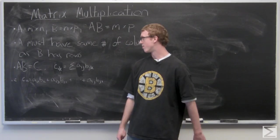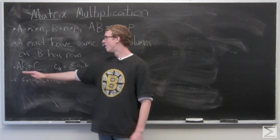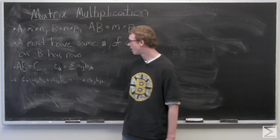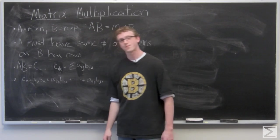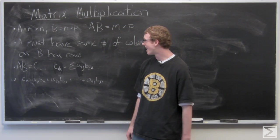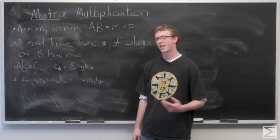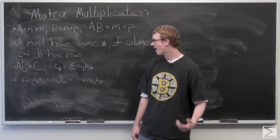We'll take a look at some examples momentarily. We have AB equals the resultant matrix C, and the components of C we've denoted as CIK is going to be the sum of AIJ times the entry BJK.